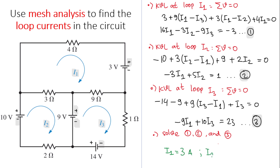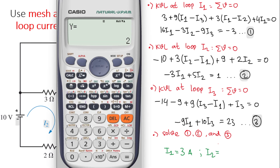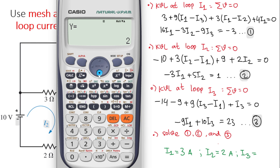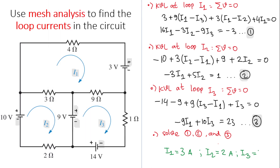i2 (the y value) equals 2 amperes, and i3 (the z value) equals 5 amperes. That's the complete solution using mesh analysis. Thank you for watching, see you in the next video.